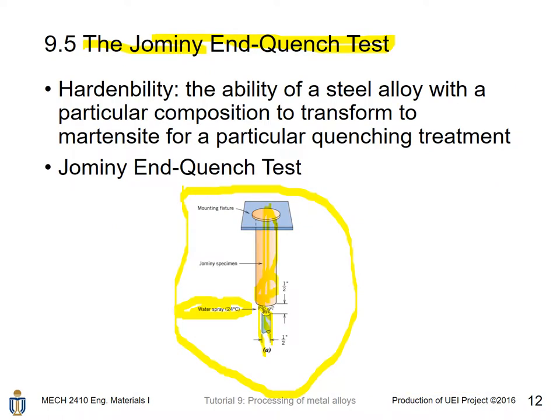In industry, we need tests to know how to quench for a specific time to obtain a specific hardness. We developed the Jominy end-quench test, in which a circular rod specimen is heated to high temperature and water is sprayed at one end. This is used to determine hardenability — the ability of a steel alloy with a particular composition to transform to martensite for a particular quenching treatment.